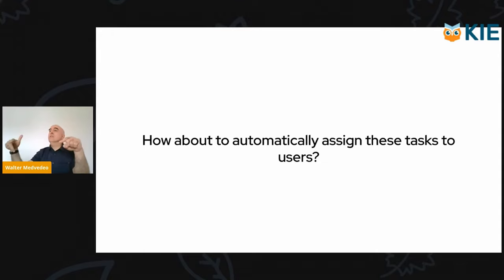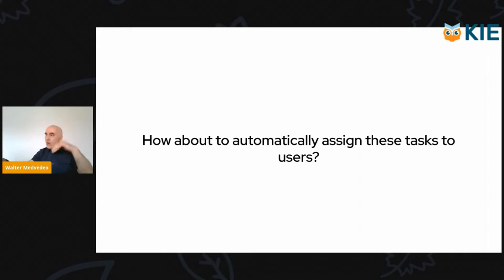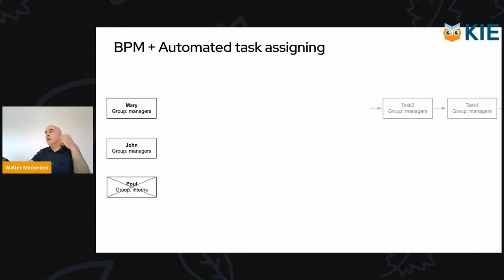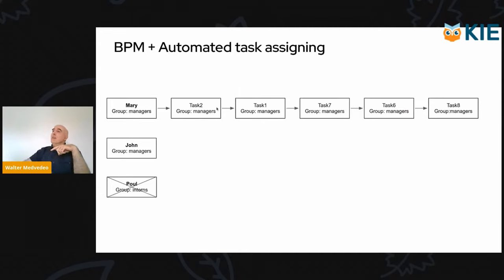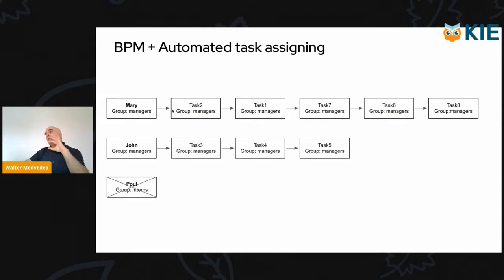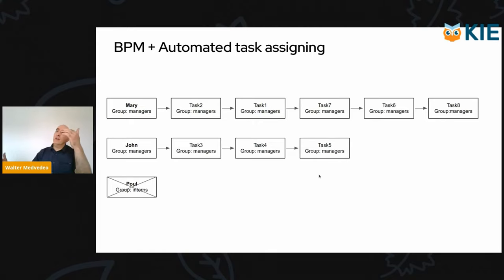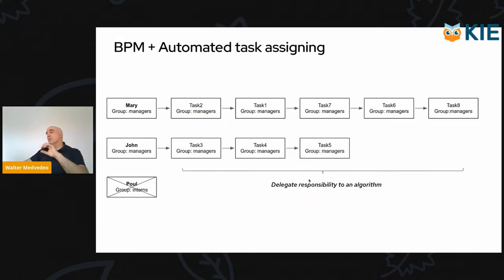The question we asked ourselves in OptaPlanner is: how about automatically assigning tasks? So instead of users having to go through a list and manually pick tasks, how about we feed every user with their piece of work to do? Mary can focus on completing only the tasks assigned to her, and the same for John. What we are doing is an inversion of control — delegating the responsibility to an algorithm.